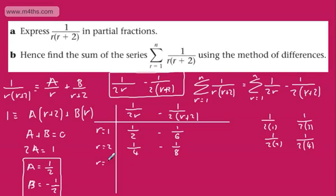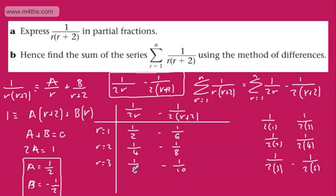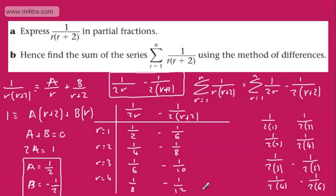We still need to show our workings. For r equals 3, it's going to be 1 over 2(3) minus 1 over 2(5), giving 1/6 minus 1/10. And for r equals 4, we would have 1 over 2(4) minus 1 over 2(6), which gives 1/8 minus 1/12. You can see what's happening with that pattern.